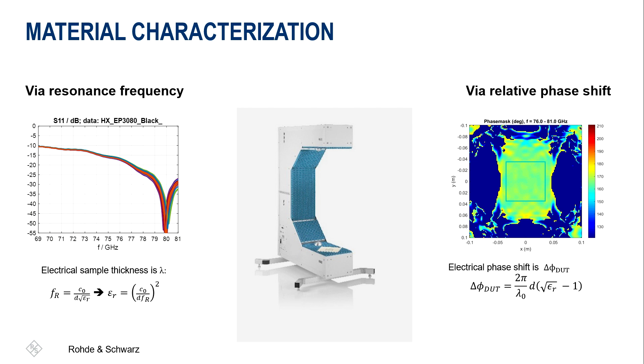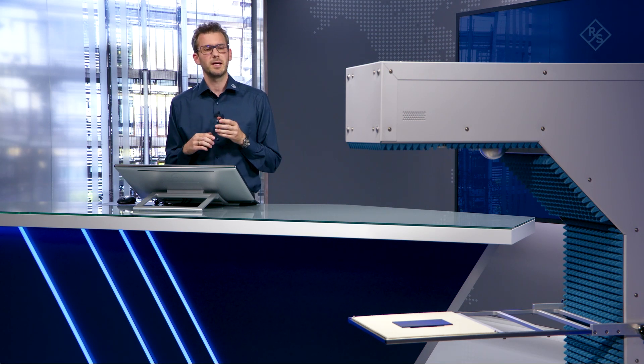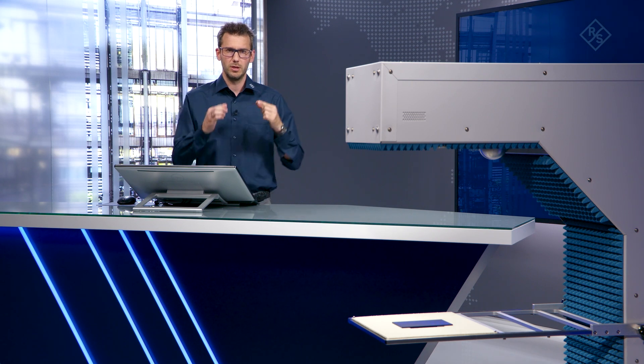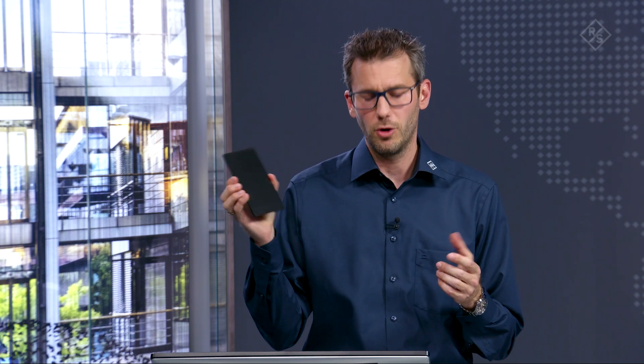Now let's see how we can perform this measurement on the actual device. I have prepared two samples. The first is a standard polypropylene plate of a certain thickness, which you need to measure as precisely as possible for accurate characterization. The second sample is the exact same plate, just with primer on it. My intention is to characterize the primer. First, I need a normalization measurement using only the bare polypropylene plate — put it into the QAR50, perform a measurement, take that as the normalization, and then perform a second measurement with the primer on.